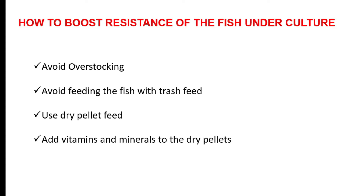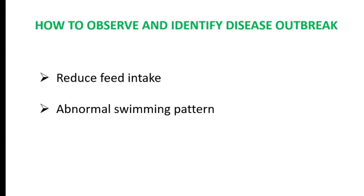The next thing is how to observe and identify a disease outbreak. First, you start observing things when there is a disease outbreak on your farm. Among those things you may begin to experience is reduced feed intake — this is the first sign of many fish diseases. Once you start observing this, keep daily records to ensure you have sufficient information to compare with the general feed intake of those fish.